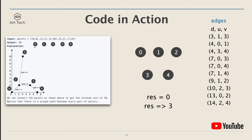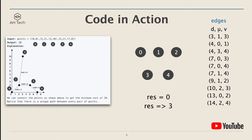For this example, I'll label each point from zero to four. Initially every point is in a different disjoint set. Here is the edge list, where each tuple contains the distance between two points and the vertices u and v. Going through the list, the first item — points one and three — are in different disjoint sets, so we add distance three to the result. Now result becomes three, and we union vertices one and three.